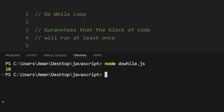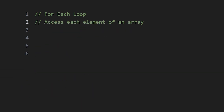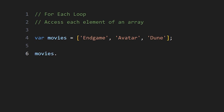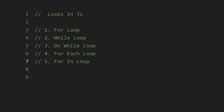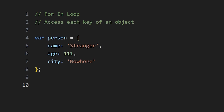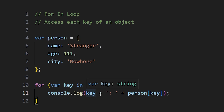The forEach loop is used to access each element of an array. For example, with a movies array, we write arrayName.forEach() passing a function with a variable like 'movie' — every element is treated as that variable and we can print it. Next is the for-in loop, used to access each key of an object. We write 'for (key in objectName)' and print the key along with its value from the person object.